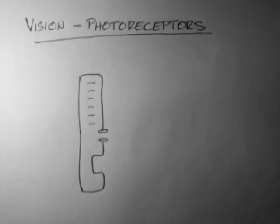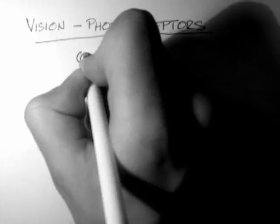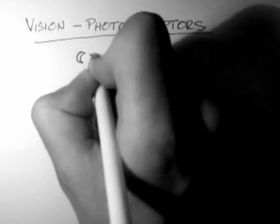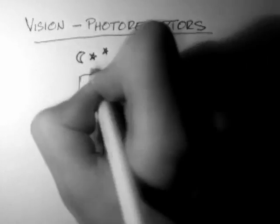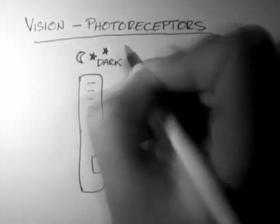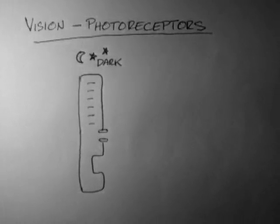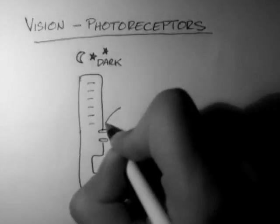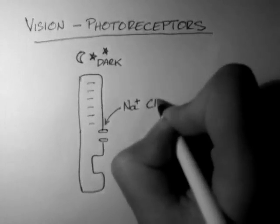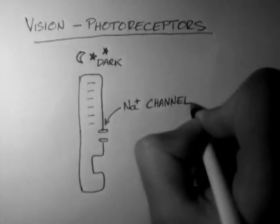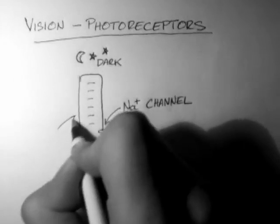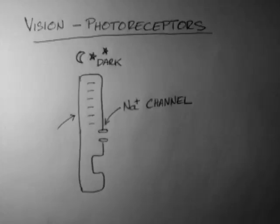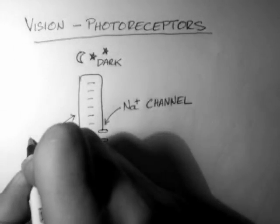We're going to look at what happens to the photoreceptor when it's in the dark. So here, we have a sodium channel. This is our photoreceptor.